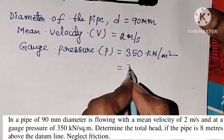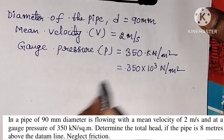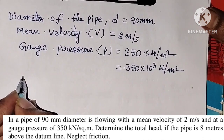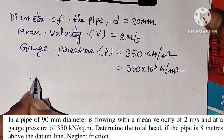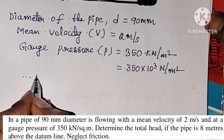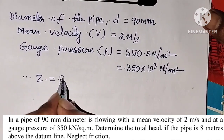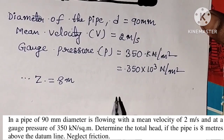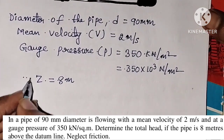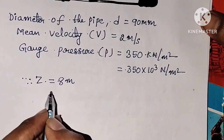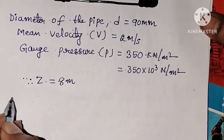Let us convert it into N per meter square. Kilo means 10 cube, so P = 350 into 10 cube N per meter square. Next, determine the total head if the pipe is 8 meters above the datum line. So, Z is equal to 8 meters, denoted by Z. We want total head.